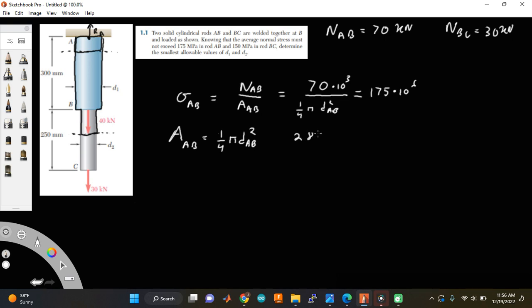So I'm going to bring this one-fourth to the top, and I'm going to get 280 over pi times 175 times 10 to the sixth power. That's going to be equal to DAB squared, so take the square root of it. And when I evaluate this, this is also times 10 to the third, my apologies. When I evaluate this, I'm going to get 0.02256 meters. So this is the allowable diameter, member AB, if this is what its average normal stress must not exceed.